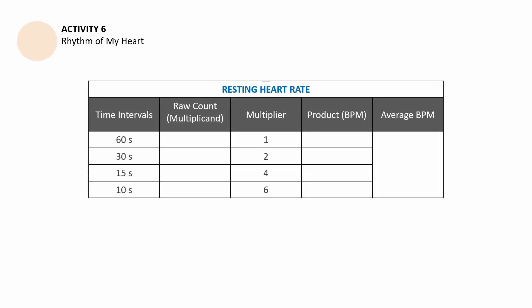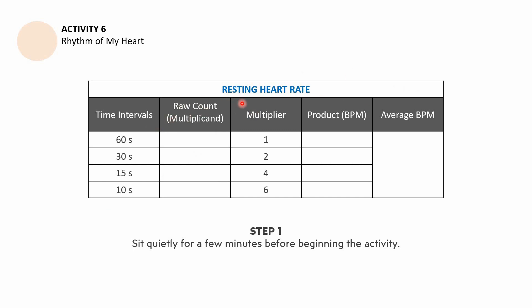The first table you need to fill in is the resting heart rate. For this part, you don't need to do anything first — sit quietly for a few minutes before beginning. The table is entitled 'Resting Heart Rate.' The first column is time intervals, which are already filled in: 60 seconds, 30 seconds, 15 seconds, and 10 seconds, along with the raw count or multiplicant.